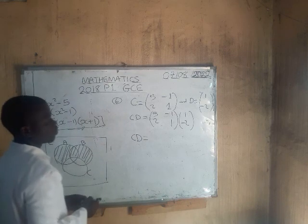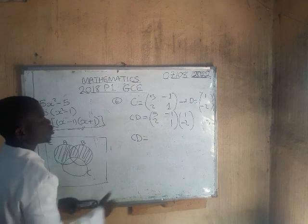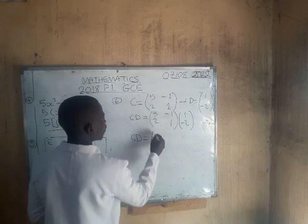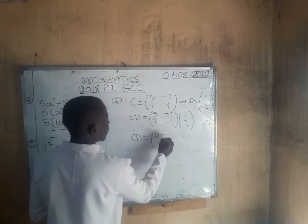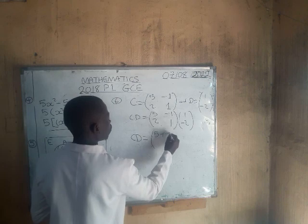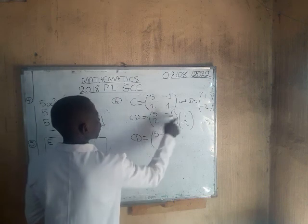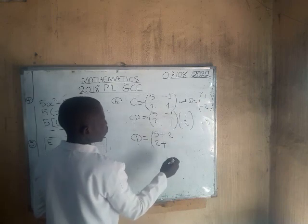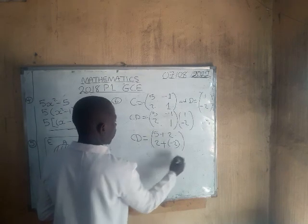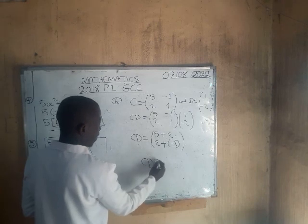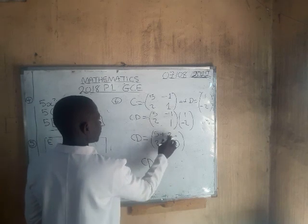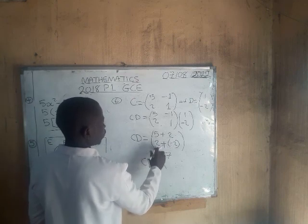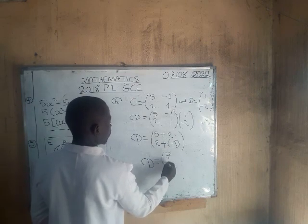Multiplying row by column: the first entry is 5 times 1 plus 2 times negative 2, which is 5 plus negative 4 equals... wait — 5 times 1 is 5, plus negative 1 times negative 2 is positive 2, giving 7. The second entry is 2 times 1 is 2, plus 1 times negative 2 is negative 2, giving 0. So CD equals [7; 0].